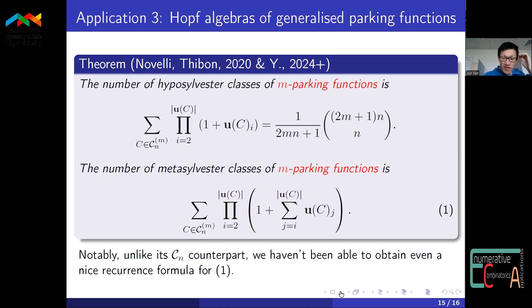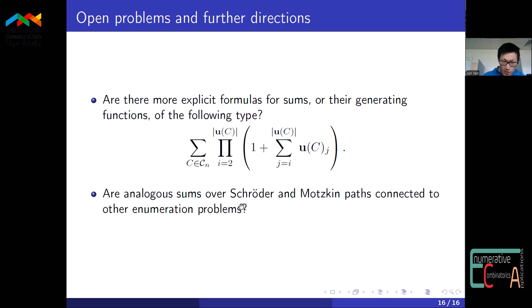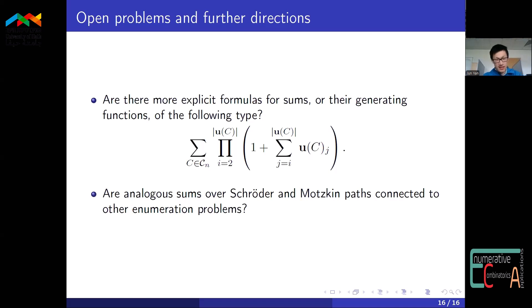One open question is whether we can do better for sums where the product depends not just on one entry of U of C but on some cumulative sum of entries — either in the Catalan path case or when summing over m-Catalan paths. Another interesting question is whether the general evaluation results for Motzkin paths and m-Catalan paths have applications to combinatorial objects in bijection with these paths, analogous to how the Catalan path sums connect to parking function enumeration via bijections with permutations. That's the end of my talk — thanks for everyone's attention.